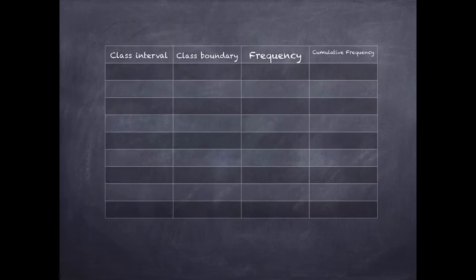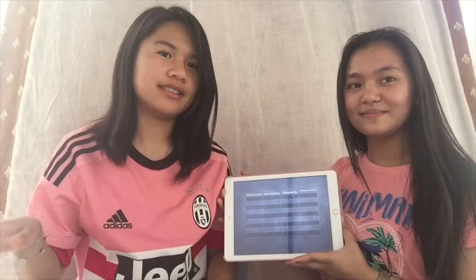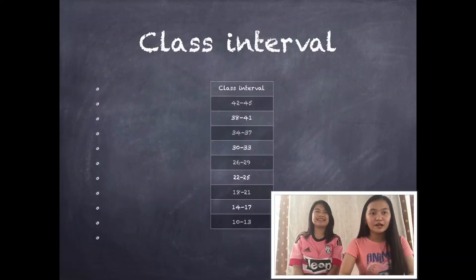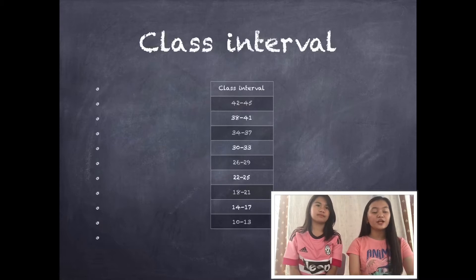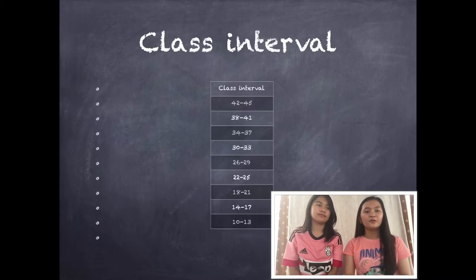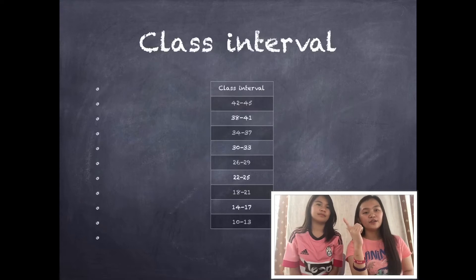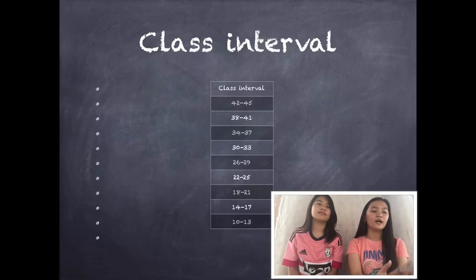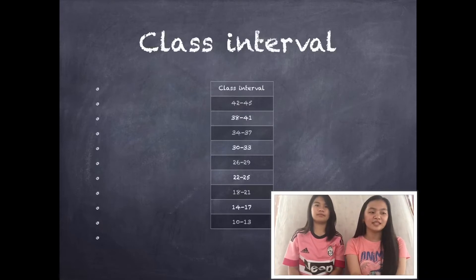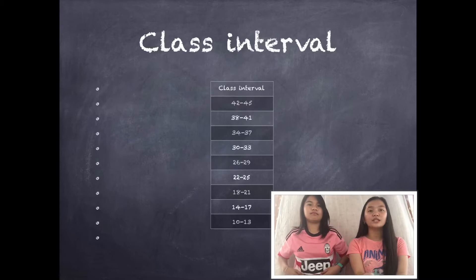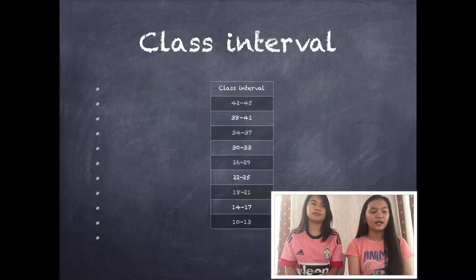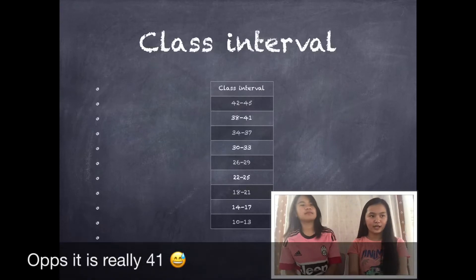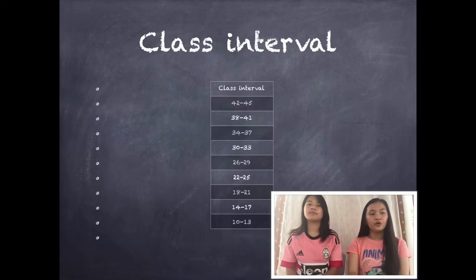Now we have the table for the percentile. For the class interval, since our class interval is 4 and our lowest value is 10, we count 10, 11, 12, 13 — that's how we get a class interval. So we have: 10–13, 14–17, 18–21, 22–25, 26–29, 30–33, 34–37, 38–40, and 42–45.